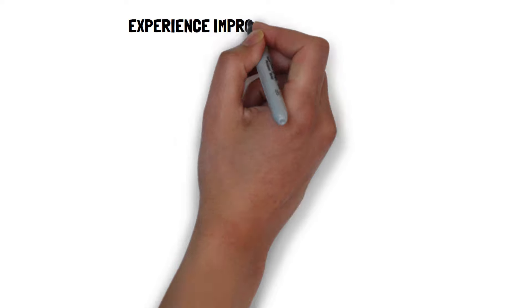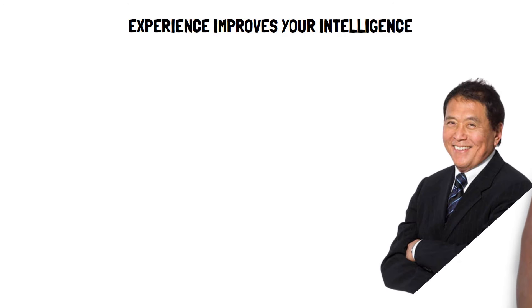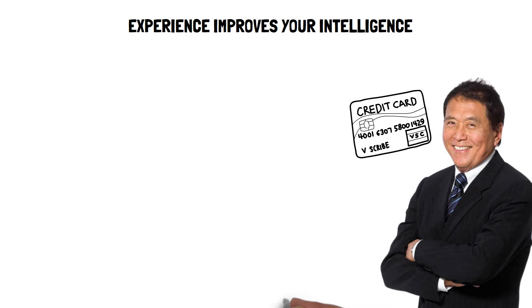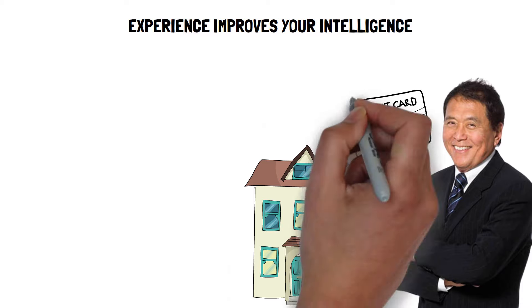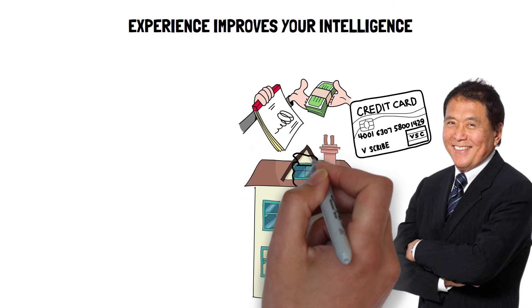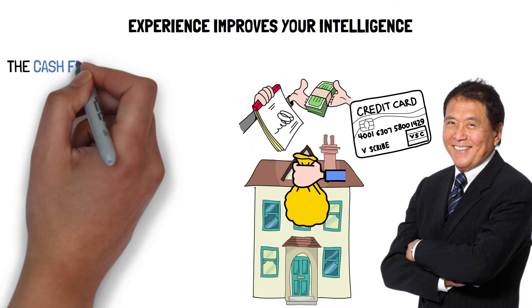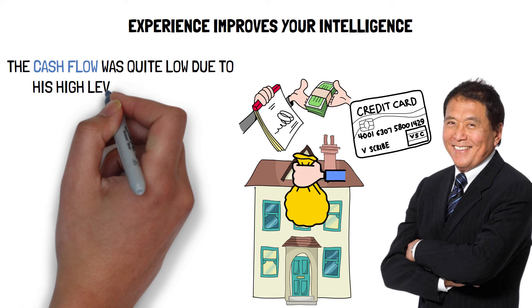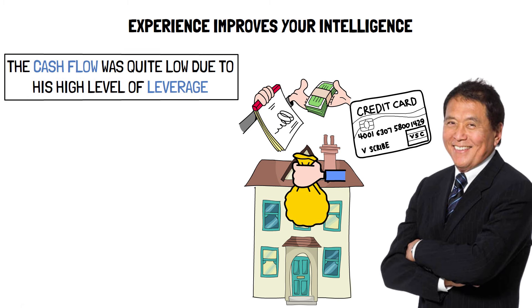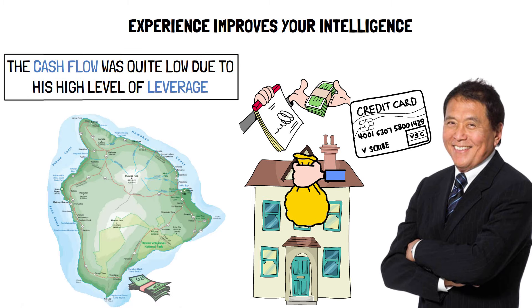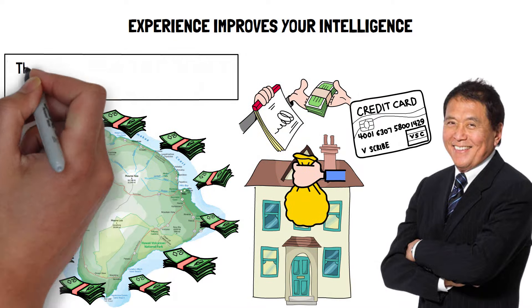Experience improves your intelligence. Kiyosaki used his credit card to make the down payment on a rental property when he initially started his real estate investing career. The cash flow was quite low due to his high level of leverage. He ended up making a big profit as a result of growing housing values in the Hawaii area, but the experience he acquired from the process was far more useful.